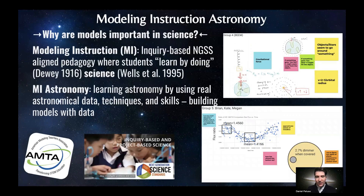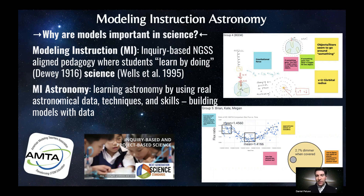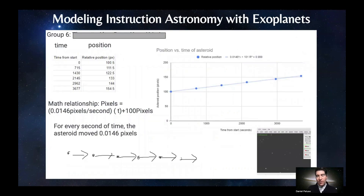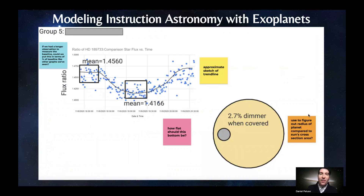Modeling instruction astronomy — why are models important in science? It's kind of what we do in science: create models and continue to refine them. Modeling instruction has been shown to be one of the most effective ways to learn science — it's inquiry-based, and it's a teaching method where students learn by doing. Modeling instruction astronomy is learning astronomy by using real astronomical data, techniques, and skills, and building models with that data. An example from our last modeling instruction astronomy with exoplanets workshop held in early 2022 used astronomical image files called FITS files to track the position versus time of an asteroid and create motion maps. We also, of course, looked at exoplanet data and learned how to analyze it.